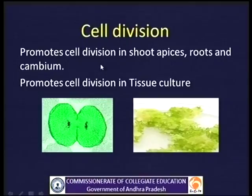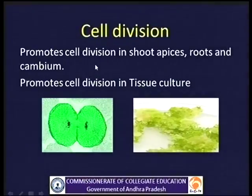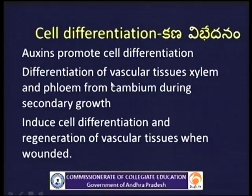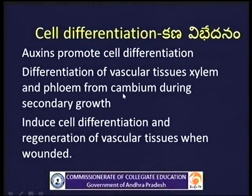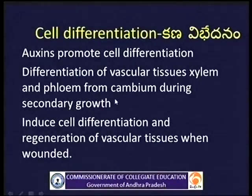The next physiological effect is cell division. Auxins promote cell division in shoot apices, roots and cambium. It promotes cell division in tissue culture also — when auxins are used in tissue culture from the explant, callus is produced. Cell differentiation: Auxins promote cell differentiation, including the differentiation of vascular tissues xylem and phloem from cambium during secondary growth, and regeneration of vascular tissues when wounded.